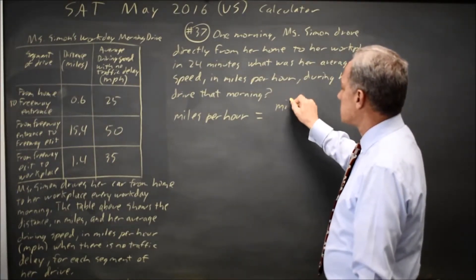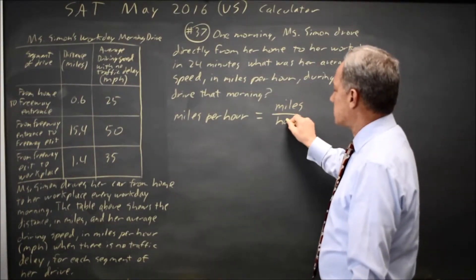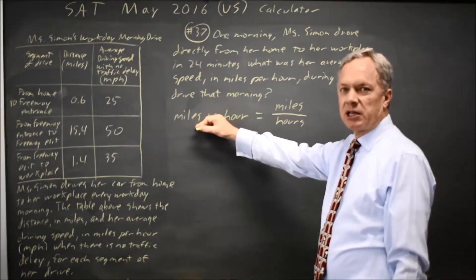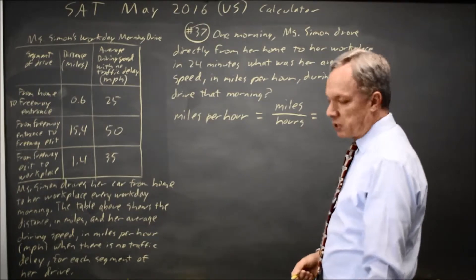That would be miles divided by hours. Remember that in math, per means divide by. So distance divided by time is going to give a speed.